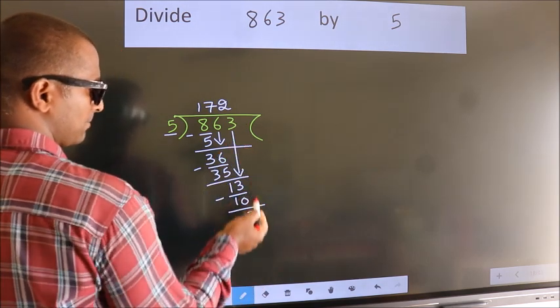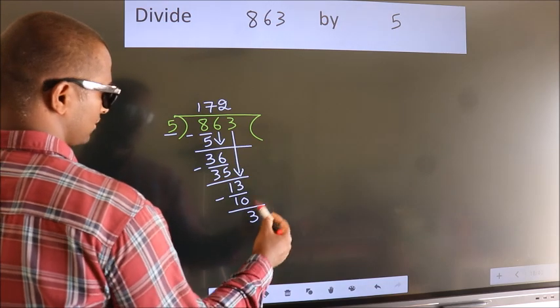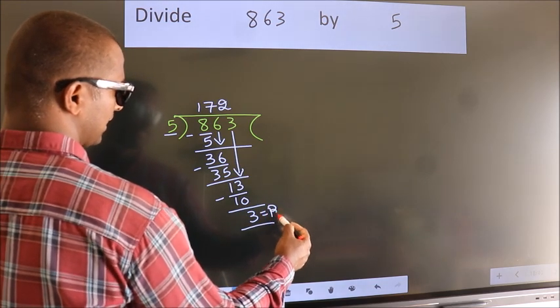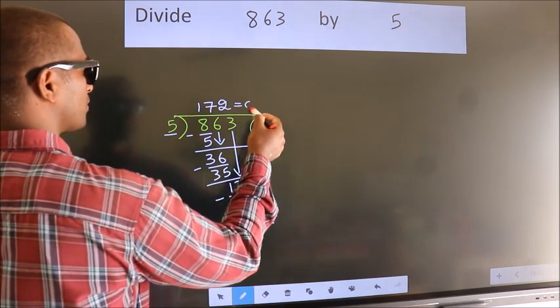No more numbers to bring down, so we stop here. This is our remainder. This is our quotient.